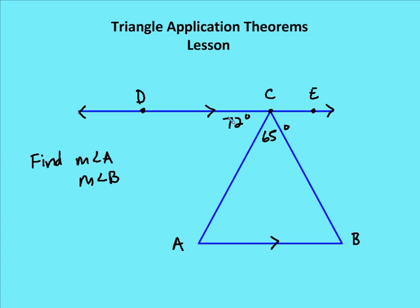We see that DE is parallel to AB. I have alternate interior angles — angle A and angle DCA. So I know angle A is 72 degrees. Again, I have alternate interior angles for ECB, but I don't know what that is. I do know that a straight angle adds up to 180 degrees, so 72 plus 65 is 137 degrees, and if I subtract that from 180 degrees, I get 43 degrees. So the measure of angle B is 43 degrees.